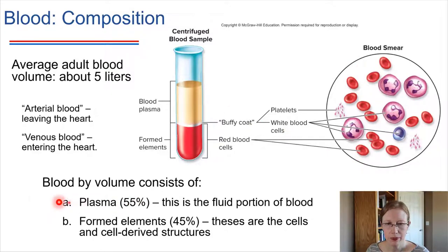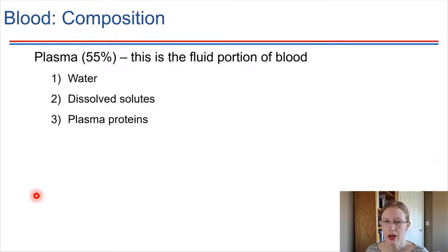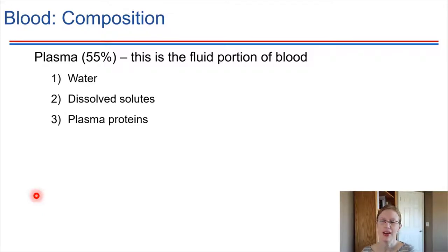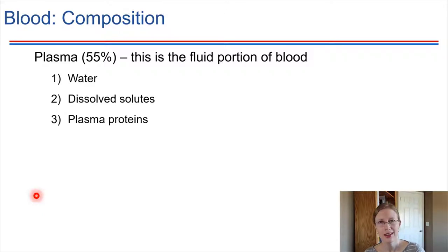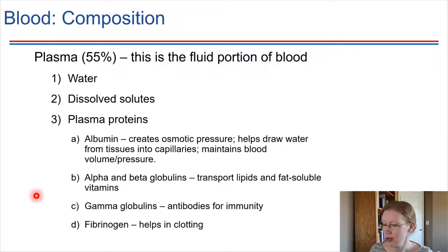Let's start with the plasma. Blood plasma is the fluid portion of the blood. It's mostly water, but it also contains dissolved substances — dissolved solutes — things we get from the digestion of food, things absorbed through the intestinal tract. It also contains plasma proteins, which we're going to be focused on in this chapter. Plasma proteins are literally just proteins suspended in the plasma that are always circulating throughout the body.